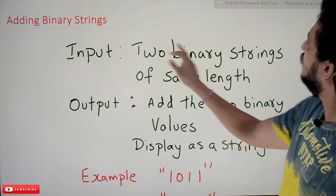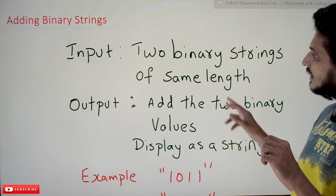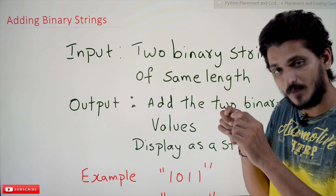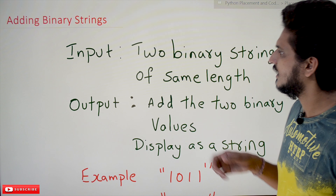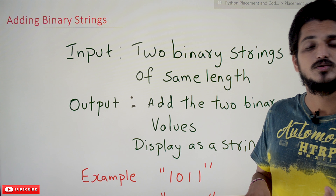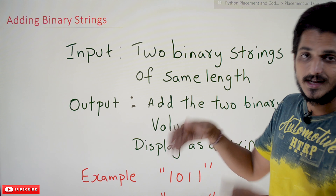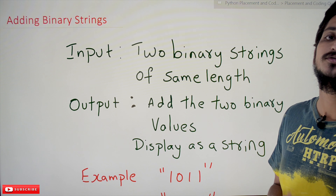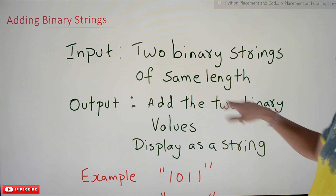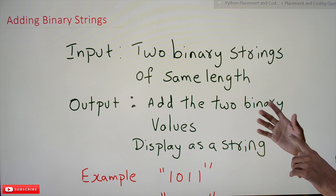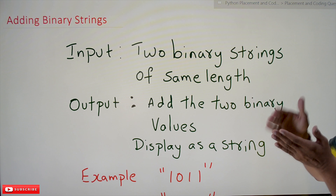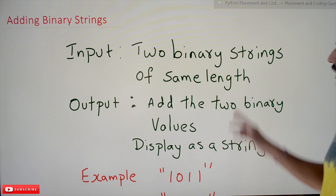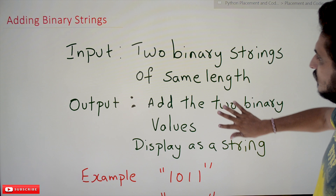Coming to the question: adding binary strings. The input is two binary strings of the same length — for example, '1010' — both strings must have binary values and be of the same length. What happens if they are not the same length, we will discuss at the end of the class. The output should be the result of adding the two binary strings, displayed in string format.